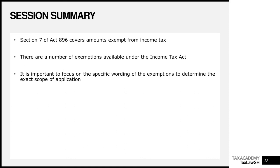Let's quickly summarize what we have done. Section 7 of the Income Tax Act covers amounts that are exempt from income tax. There are a number of exemptions available, which we've gone through. The concept checkers show it's important to focus on the specific wording of the exemptions to determine their exact scope. Many exam questions from ICAG and CIOT Ghana ask students to state specific conditions attached to exemptions — such as whether a person is resident, or whether payment is from the Consolidated Fund — so please remember these conditions. Hopefully this has been helpful — don't forget to like the video and I'll see you in the next session.